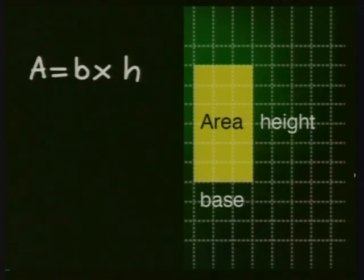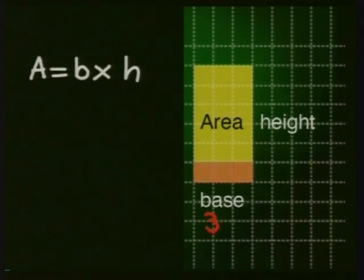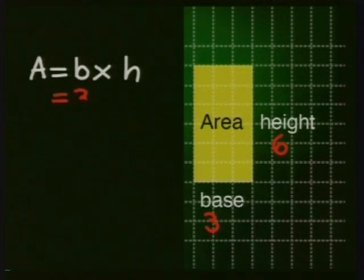It is always useful to look at a simple two-dimensional shape first. Here is the rectangle we used in an earlier lesson. We found its area quite easily by using length times breadth, or base times height. It was 3 times 6, which comes to 18 square units.